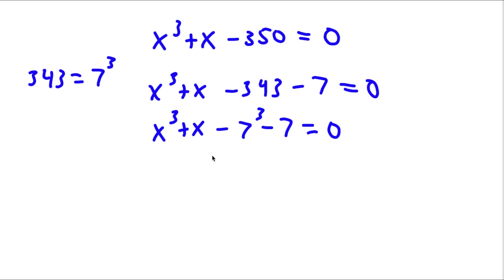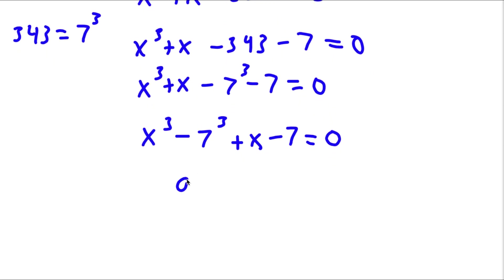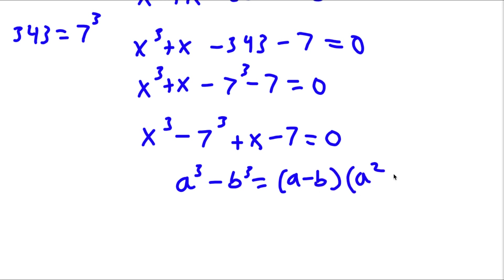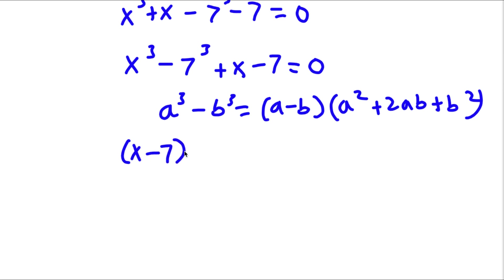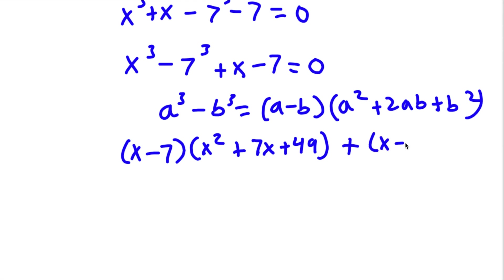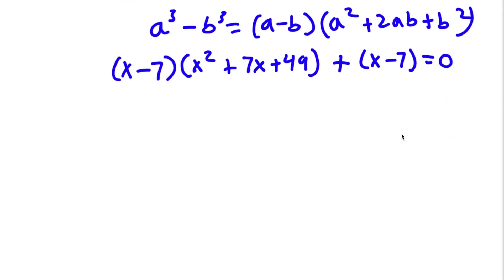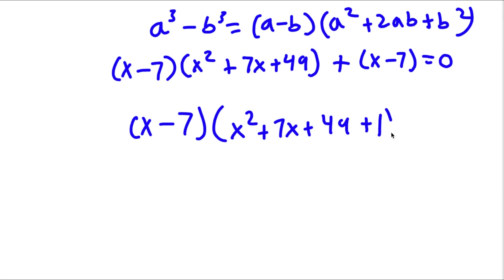I'm going to rearrange this into the form x to the power of 3 minus 7 to the power of 3 plus x minus 7, equal to 0. Now if I have something in the form a to the power of 3 minus b to the power of 3, this equals a minus b times a squared plus 2ab plus b squared. So this gives x minus 7 times x squared plus 7x plus 49, plus 1, equals 0. Factoring out x minus 7 gives x minus 7 times x squared plus 7x plus 49 plus 1 equals 0.